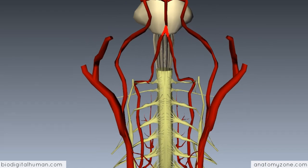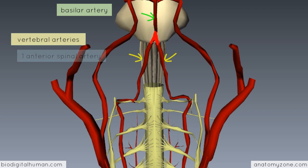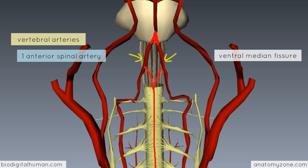After entering the cranial cavity through the foramen magnum, the vertebral arteries anastomose to form the basilar artery. What we're interested in is the vertebral arteries giving off the anterior spinal arteries. You get an anastomosis coming off the vertebral arteries on either side, forming the anterior spinal artery, which runs down the spinal cord its entire length, anterior to the ventral median fissure, or anterior median fissure.